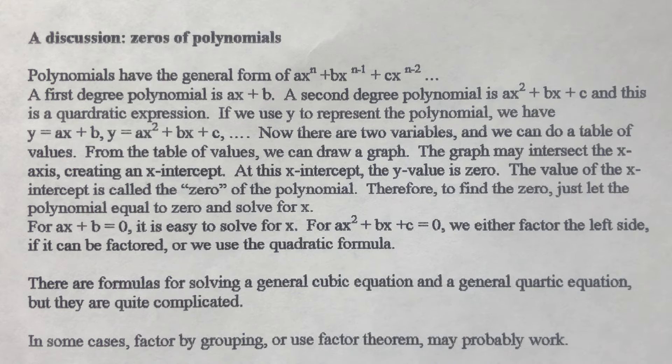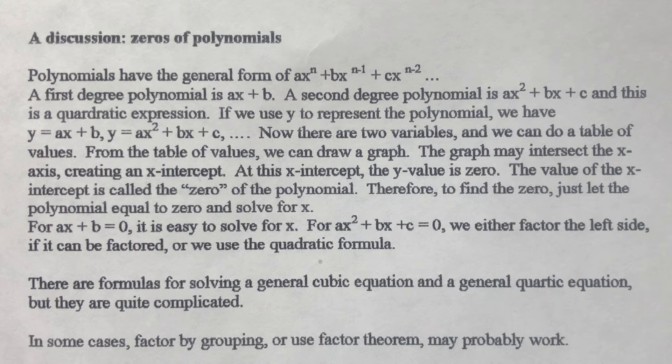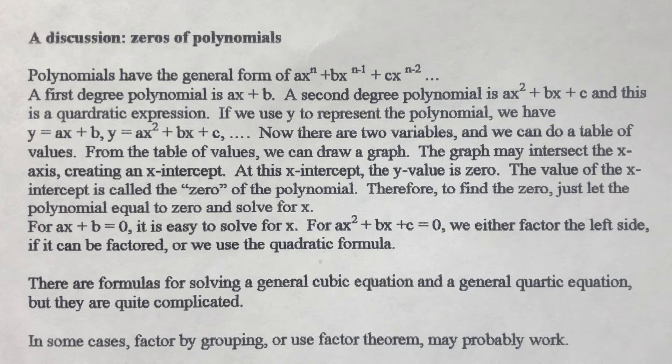Zero of a polynomial means the x-intercept of the graph. And the way to find it is to solve for the equation. You let the polynomial equal to zero, you have an equation. And you find the value of x of that equation. So this is the meaning of zeros of polynomials.